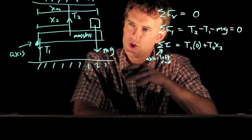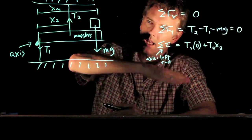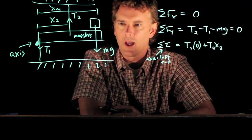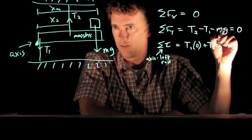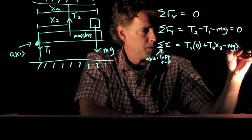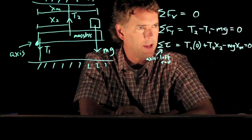And mg is acting to rotate it in a clockwise direction. And therefore we give it a minus sign. And its lever arm is what we call x sub m. And all of that has to add up to zero.